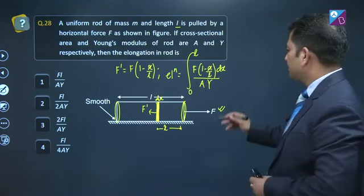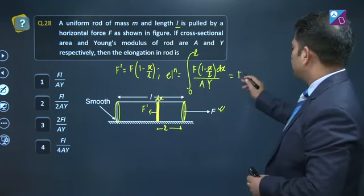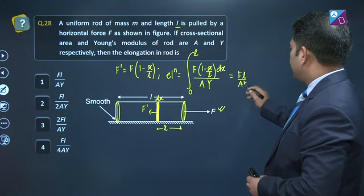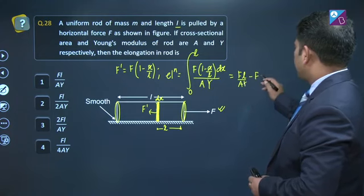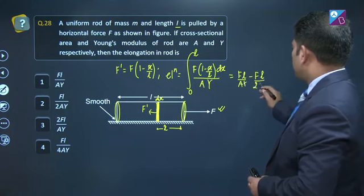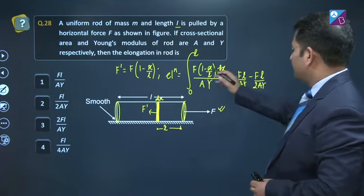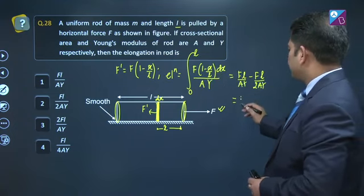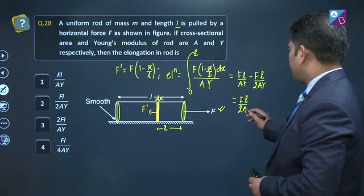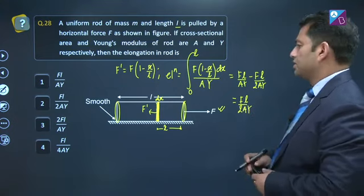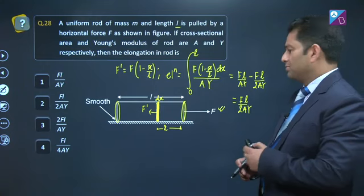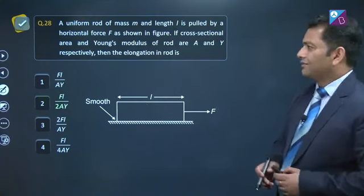Let us see, how much will that be? That is equals to f L by a y minus f L by 2 a y. Straightforward integration here. And this comes out to be f L divided by 2 a y, jo ki option number 2. So option number 2 is the correct one for this question.